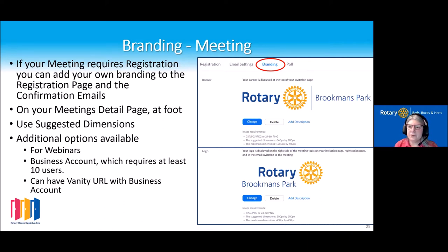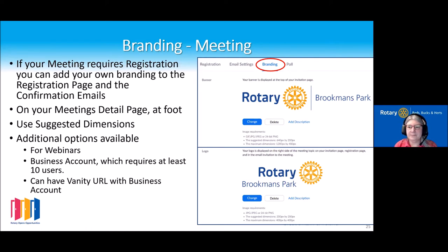There's a second option of a smaller square image at 200 by 200 pixels. You could put in an image of the theme of the meeting, like today's masterclass, or if you have a speaker you could include an image of the speaker.